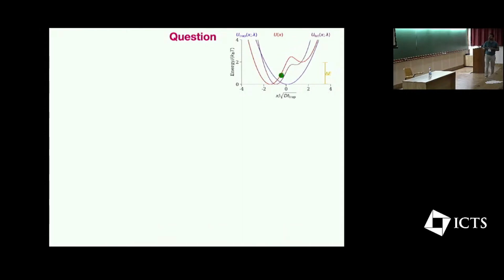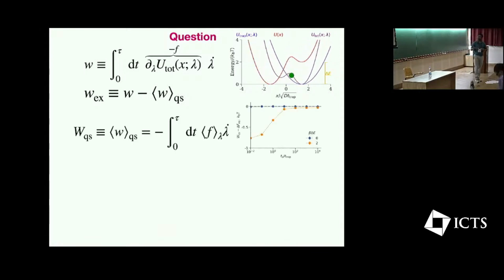So what do I mean by external work? External work along a single stochastic trajectory is the time integral of force that is coming due to change in the protocol or parameter, and the parameter is here basically trap minimum, times the rate of change of parameter lambda dot. The interesting quantity to compute is excess work, which is the additional or extra amount of work that I pay to drive the system above the quasi-static limits. So the quasi-static work is basically the work that I compute when I drive the system in a quasi-static fashion or in a slow driving limit.